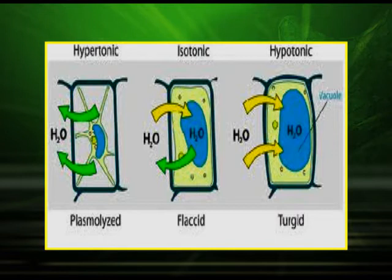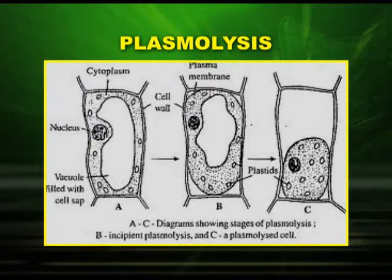A very important process seen in plants is plasmolysis — the shrinking of cytoplasm within the plant cell. The diagram shows a turgid cell, then a plasmolyzed cell, and finally complete plasmolysis, which is the full shrinking of cytoplasm. This occurs when the cell is placed into a hypertonic solution.